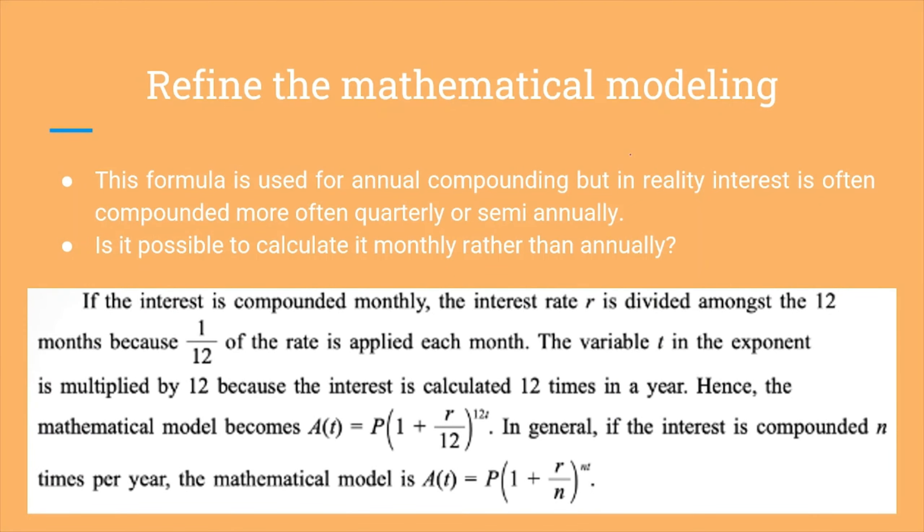We refine the mathematical modeling. This formula is used for annual compounding, but in reality, interest is often compounded more frequently like quarterly or semi-annually. Is it possible to calculate monthly? Yes, we can do that. If the interest is compounded monthly, the interest rate is divided by 12, so 1 over 12 is applied each month. And T is multiplied by 12 instead, as it's calculated 12 times in a year.